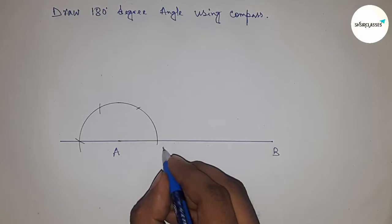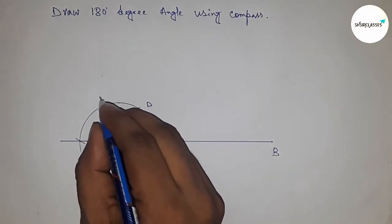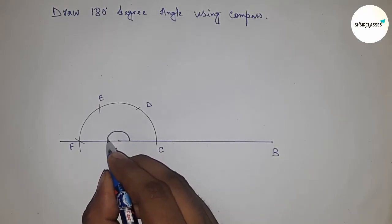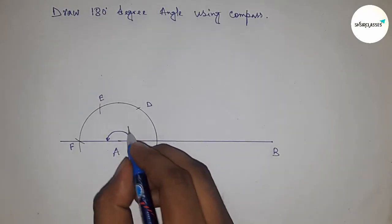Now this is point C, this is D, this is E, and F. So angle FAB equals 180